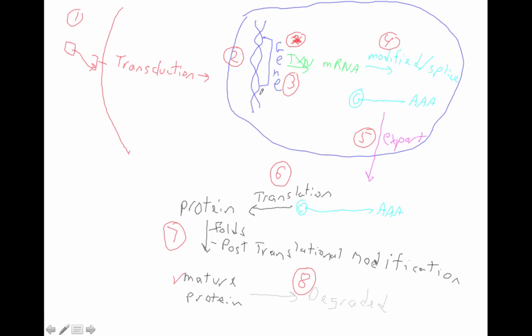Bacteria are kings of biochemistry — they're essentially a membrane sac of biochemical reactions, and they do biochemistry better than anything. They regulate their genes primarily at the level of transcription, and they can also regulate it at the level of protein, not so much in the folding process but in a pathway process. Let's talk about that pathway process first. Bacteria perform biochemistry better than any cell, so I'm going to write biochemical pathway here.